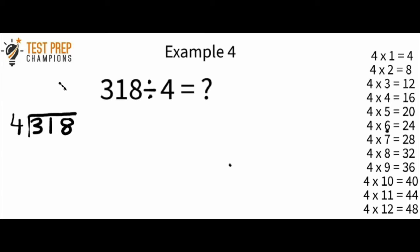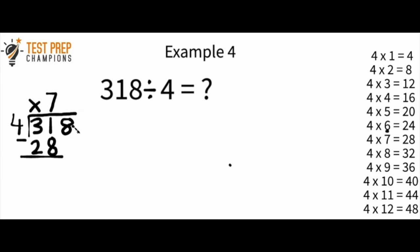Here's the fourth example: 318 divided by 4 — I've already rewritten it for you. Pause the video and try this out. The first question is: does 4 go into 3? It doesn't, so I put a little x here. Now I look at the 31 and think: how many times does 4 go into 31? 4 times 7 gives me 28, which is close to 31 but a little less, so 4 goes into 31 seven times. I put the 7 directly on top of the 1. 4 times 7 is 28, so I write 28 here. Then I do 31 minus 28, not worrying about the 8 yet, which gives me 3.